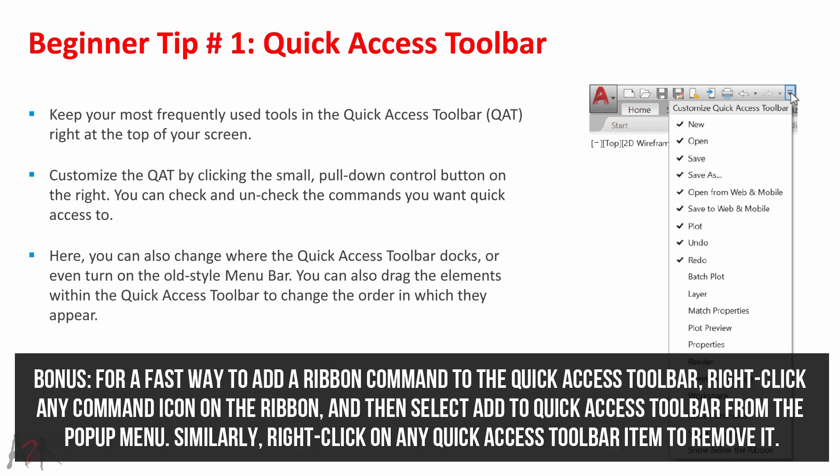Bonus: for a fast way to add a ribbon command to the Quick Access Toolbar, right-click any command icon on the ribbon and select 'Add to Quick Access Toolbar' from the pop-up menu. Similarly, right-click on any Quick Access Toolbar item to remove it.